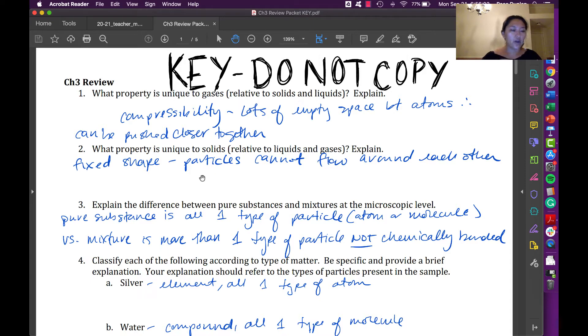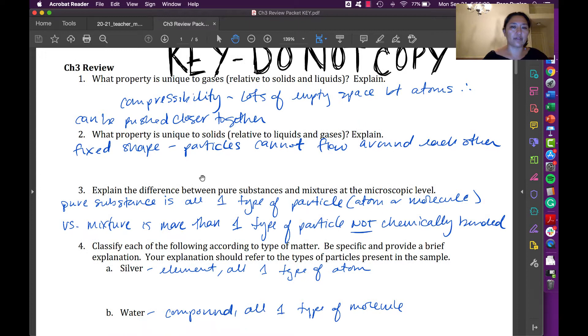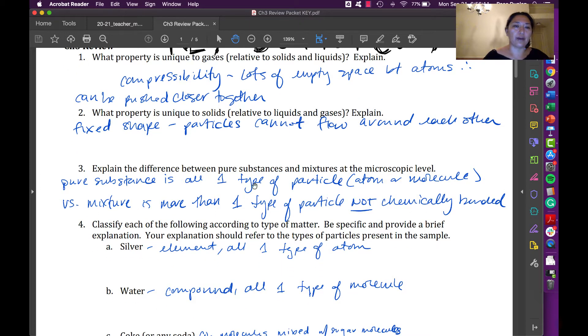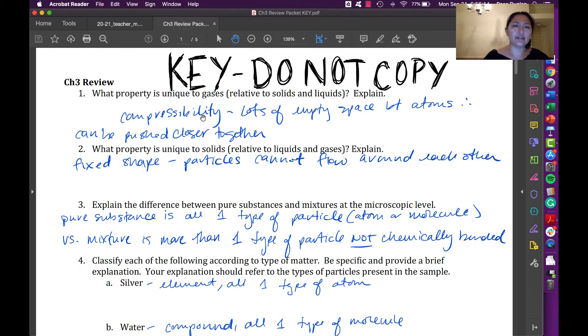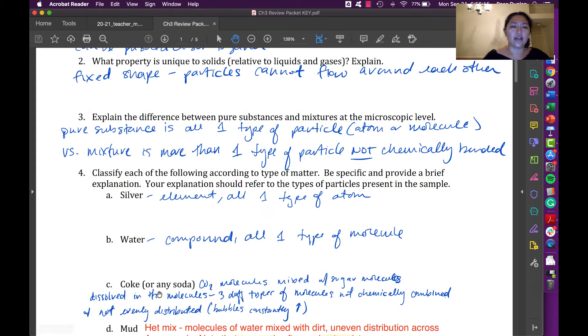In chemistry, there's always a relationship between what we can see and what we can then assume about what's happening at the microscopic level. So do be mindful about that. And I would say that goes with all these properties, the types of matter.